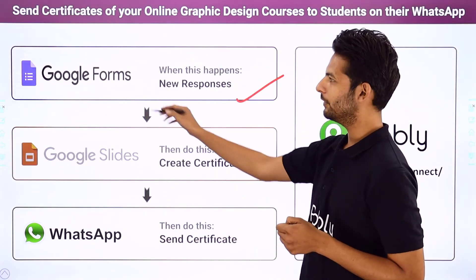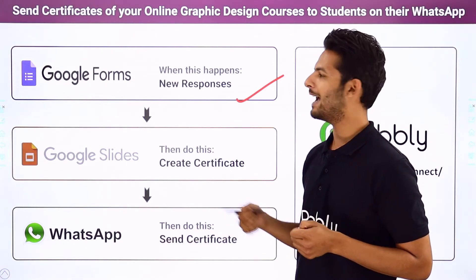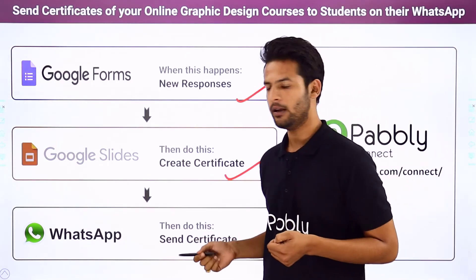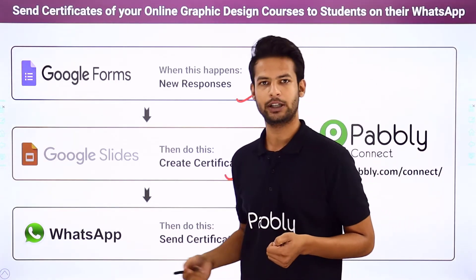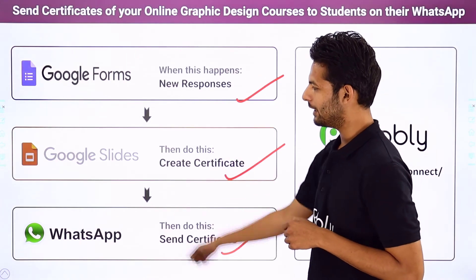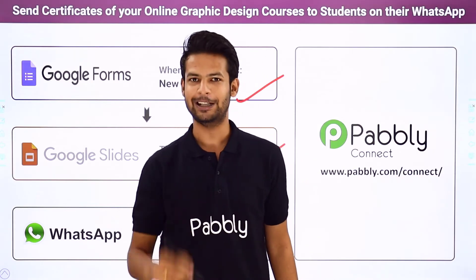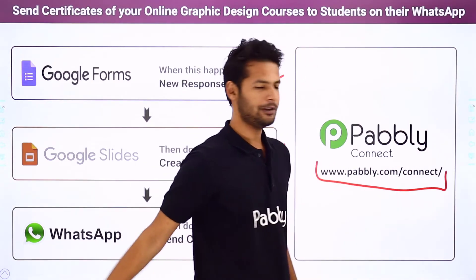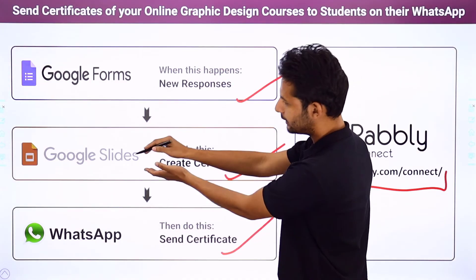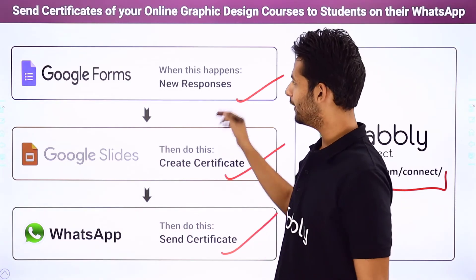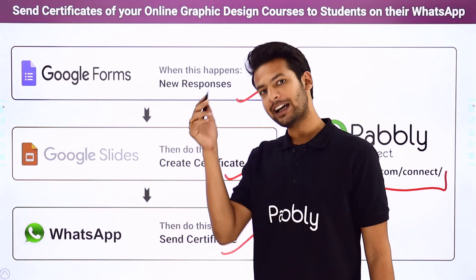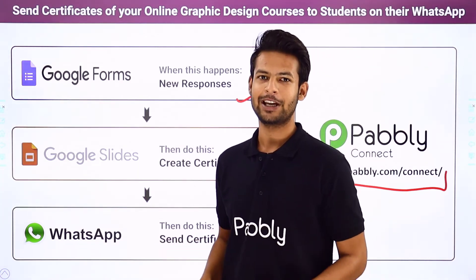For that I have used three applications. First is Google Forms to collect student data — you can also use Pabbly Form Builder or JotForm. Then I have used Google Slides to create the certificate. Finally I have used WhatsApp to send the certificate. However, there is no direct integration between these applications, so I have performed the automation with the help of Pabbly Connect.